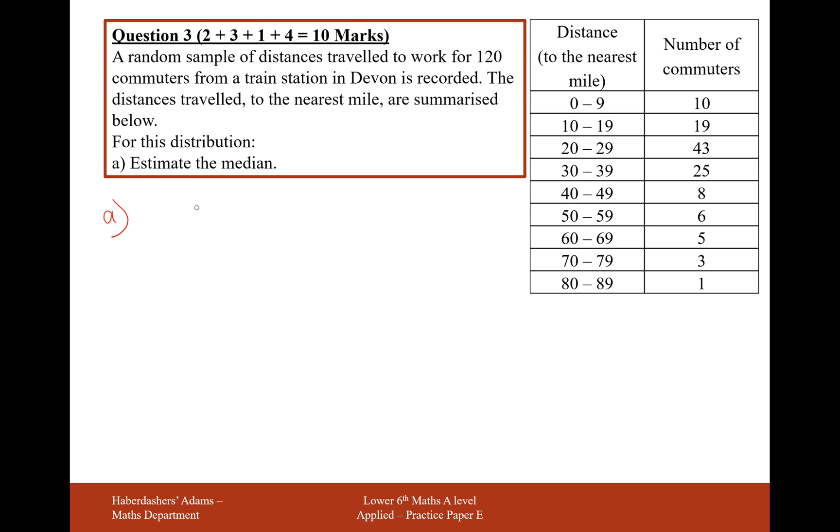Okay, so if we've got 120 commuters, then the 60th commuter is going to be the median. So we need to find an approximate value for the 60th piece of data.